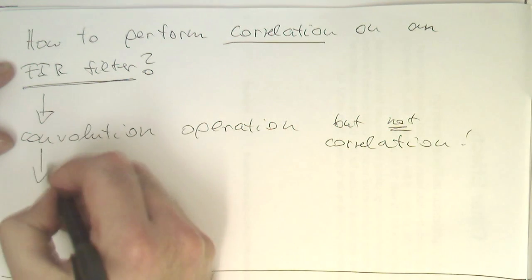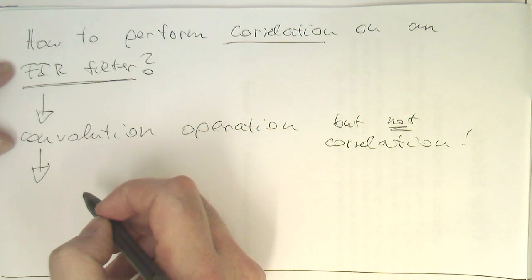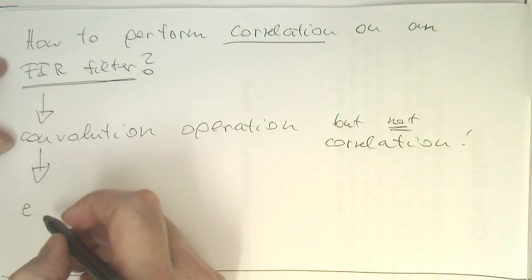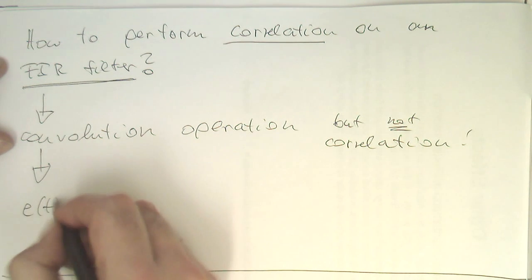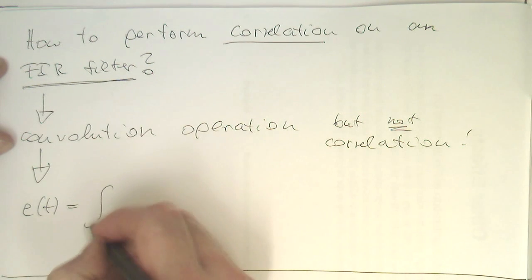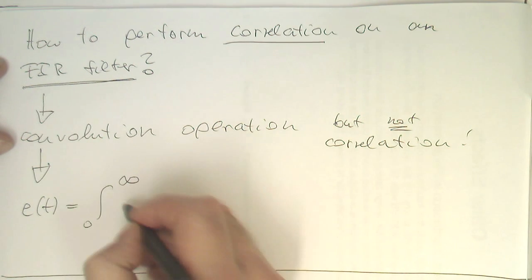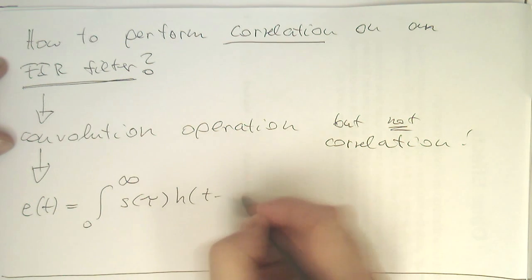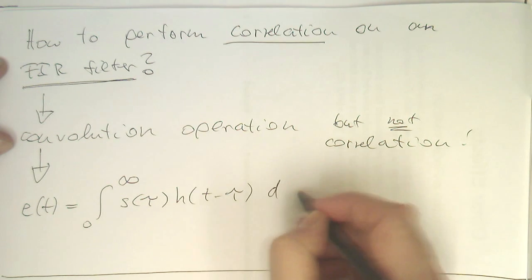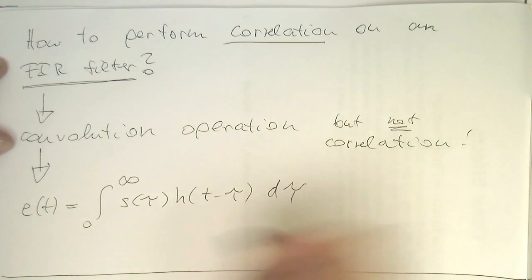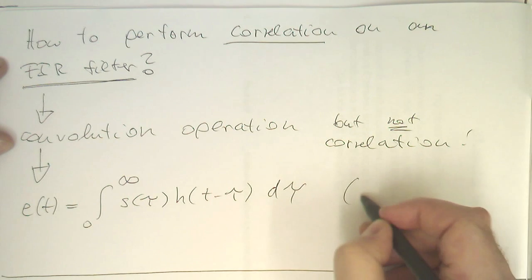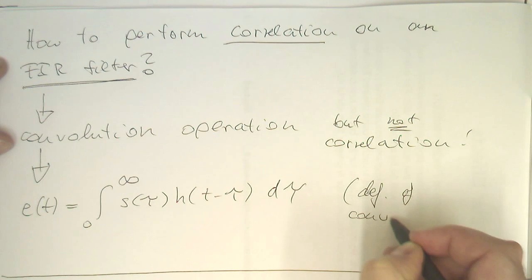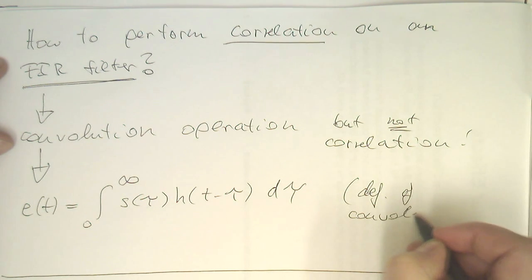So, what was convolution again? The definition of convolution was e of t as from 0 to infinity and then s of tau h of t minus tau d tau. So, this was the definition of convolution.